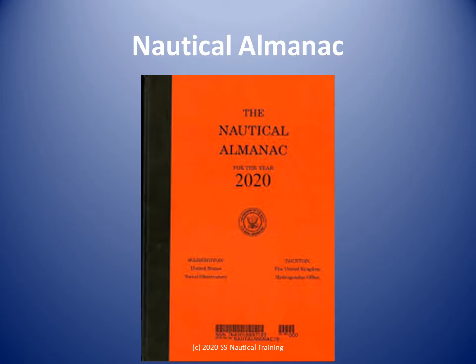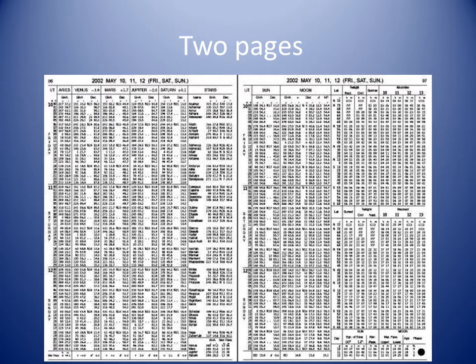The Nautical Almanac is a publication describing the positions of a selection of celestial bodies for the purpose of enabling navigators to use celestial navigation to determine the position of their ship while at sea. There is a new Nautical Almanac published for every year. The information is presented mainly by day and by hour, over two pages.